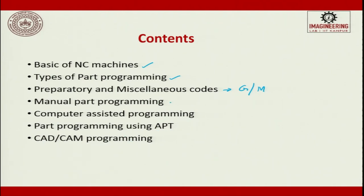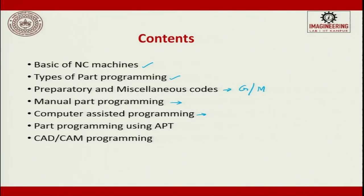Manual programming is for simple components wherein a beginner or semi-skilled person can look at the component, look into the features, look into the dimensions and make a part program. But in reality today part features are becoming more and more complex, so we are going to use computers for assisting in programming. Apart from G codes and M codes, there is another way to write programs which is APT, and finally CAD CAM programming which is part of the CIMS environment.